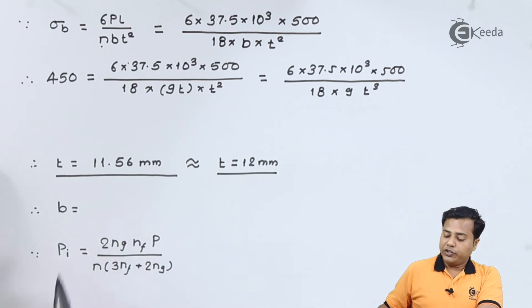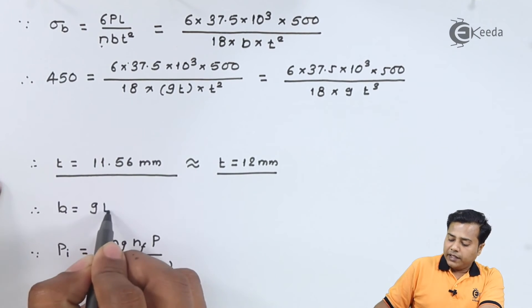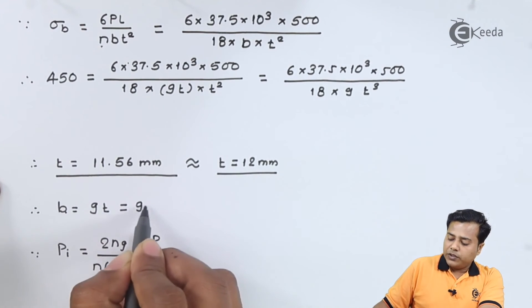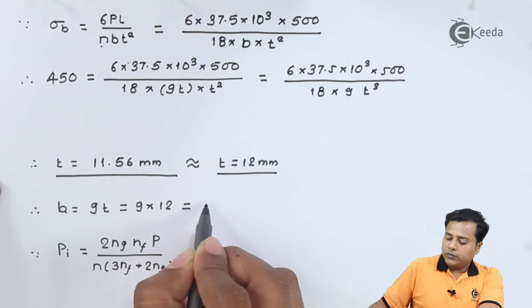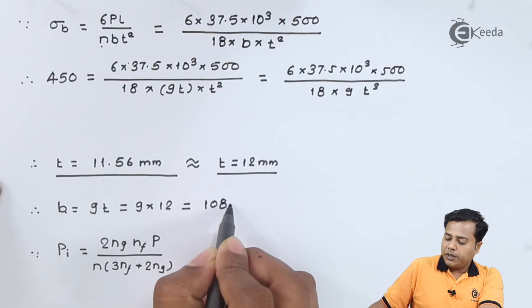We already know a relation between thickness and the width. It makes it 9 times t. After substituting this value, 108 millimeter.